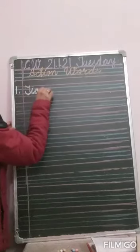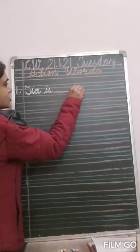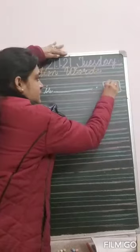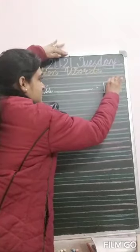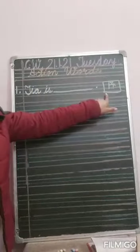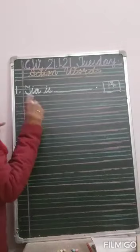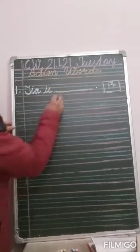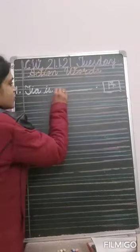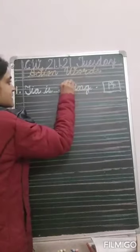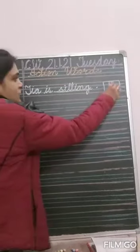Tia is dash. See this action now. What is Tia doing? Tia is sitting. So we will write here: sitting. S-I-T-T-I-N-G. Tia is sitting.